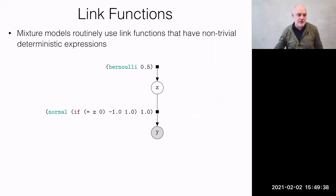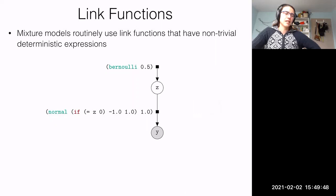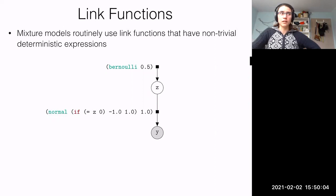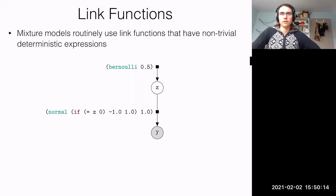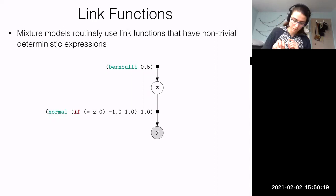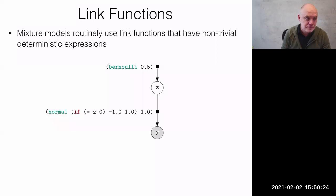Student: In this notation, it looks like it's saying if Z is zero it's centered at negative one, and if Z is any other value it's centered at one. Instructor: That's correct. But we also know the type of Z because it's a Bernoulli-distributed random variable and it can only be zero or one. Good question.